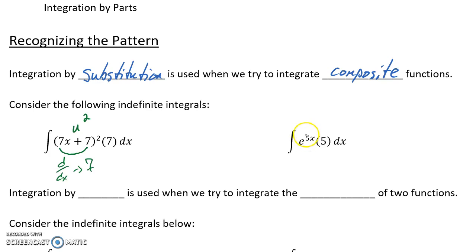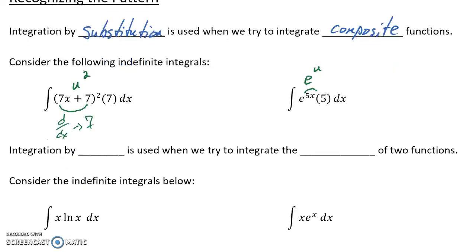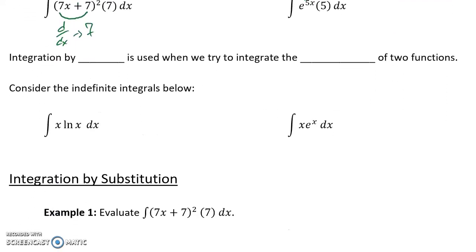If we look at the second problem that we have here, we have e to the 5x, which we could consider writing as something like e to the u. So in each of these cases what we have is a composite function—some function being plugged into another one. In this case we have 5x being plugged into e to the u. In this case we have 7x plus 7 being plugged into u squared. So for those cases we will use integration by substitution, which we will start introducing shortly.